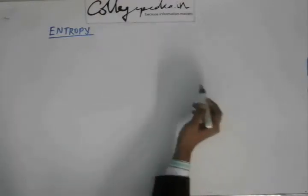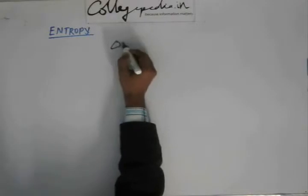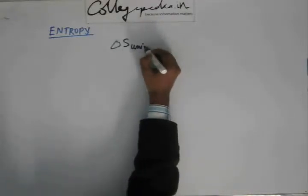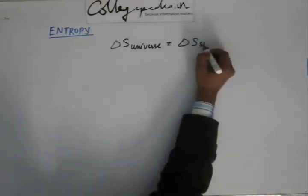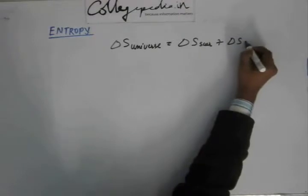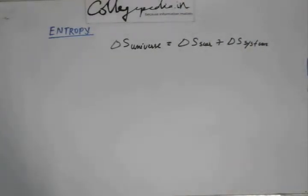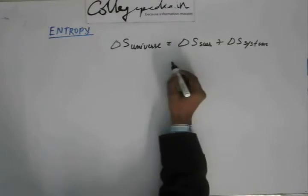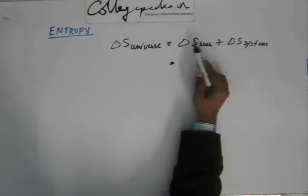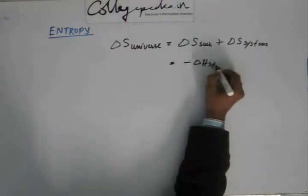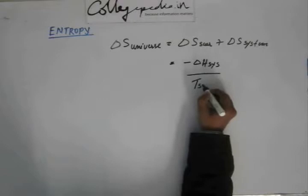The time has come to define a new parameter that will be more useful than ΔS_universe. When calculating ΔS_universe, we have to deal with ΔS_surrounding plus ΔS_system. If somehow we can boil this expression down to parameters using only ΔS_system, that will make life much easier. ΔS_universe equals ΔS_surrounding plus ΔS_system, and ΔS_surrounding was written before as minus ΔH_system divided by T_surrounding.